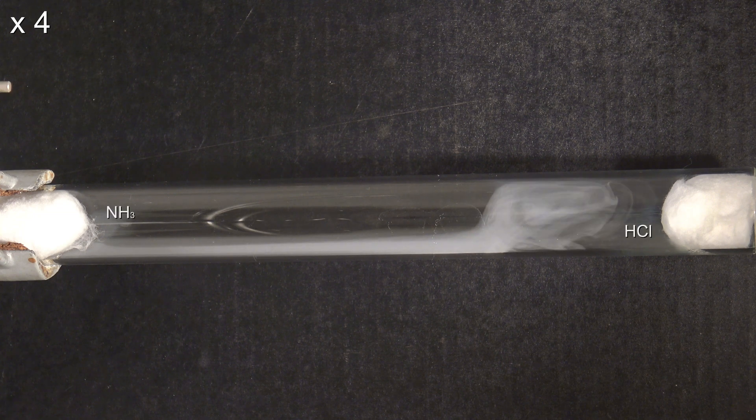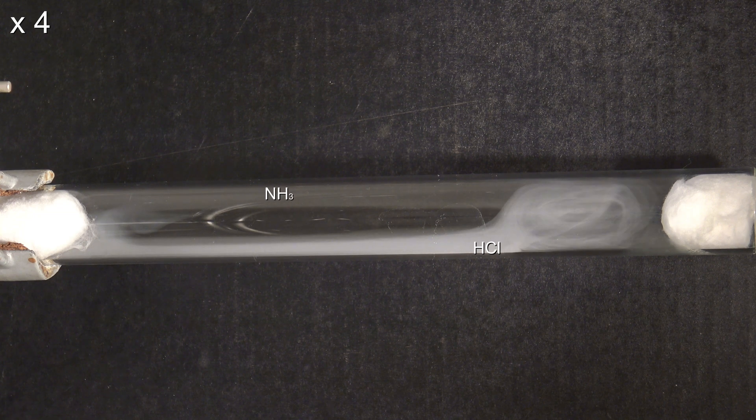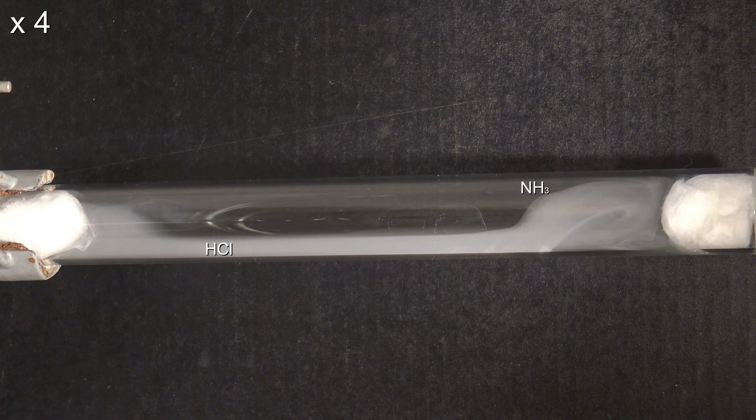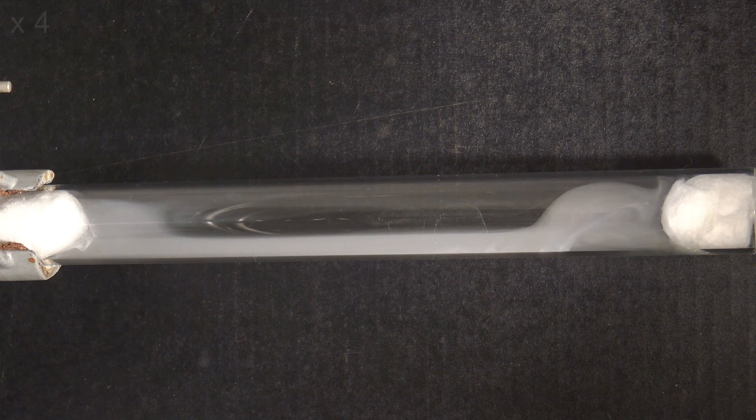The heavy hydrogen chloride drops to the bottom and moves to the left, while the less dense ammonia moves up and to the right. More ammonium chloride is formed where the gases meet.